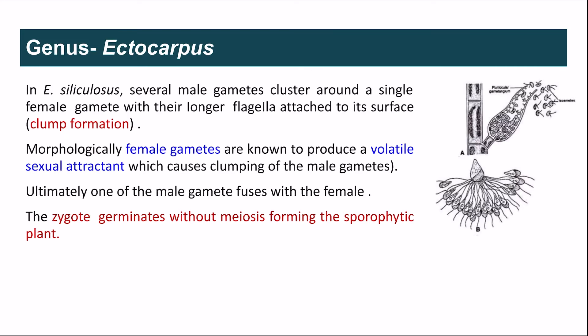In the plurilocular gametangia, many haploid gametes are formed. Generally two gametes from different thalli fuse. In Phaeophyceae, the physiologically female gamete secretes a volatile sexual attractant and many male gametes attach to the female gamete with the help of the anteriorly directed tinsel flagellum — this is known as clump formation. One of the male gametes retracts its flagellum and the male nucleus fuses with the female nucleus, forming a diploid zygote.